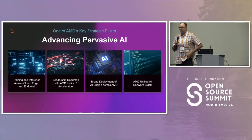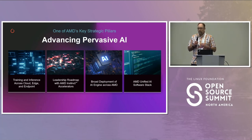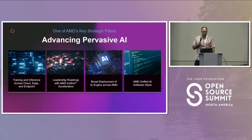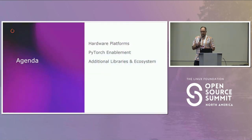As part of AMD, AI is really one of the key pillars — it's important for both training and inference in the cloud and on edge devices. AMD has a wide range of hardware, and we see AI becoming pervasive across the industry, as everyone here knows based on even the last few months of interest. I want to talk today about the different hardware platforms, how those are enabled with PyTorch, and then some additional libraries.